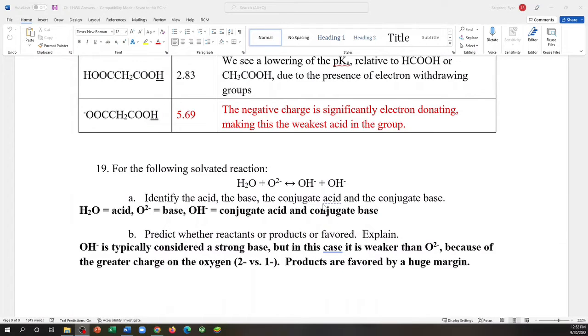You want to identify the acid, the base, the conjugate acid, and the conjugate base. Conjugate acid and conjugate base are easy because you get two things. So one of them, whichever one you want, is the conjugate acid and the other one is the conjugate base.